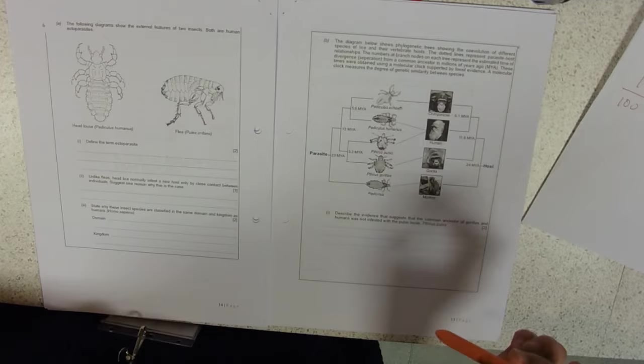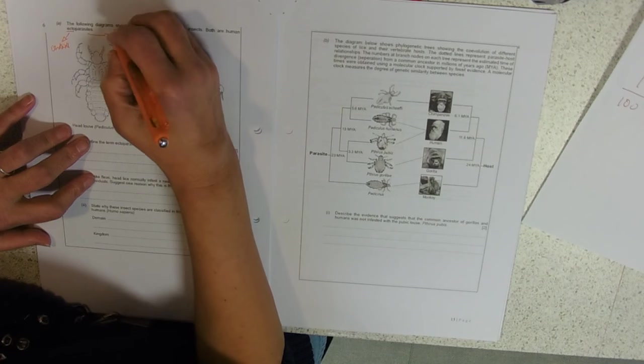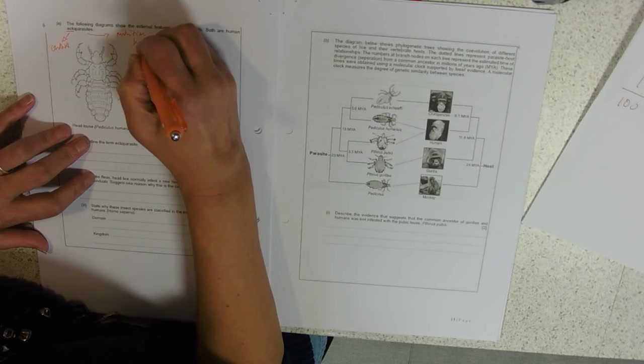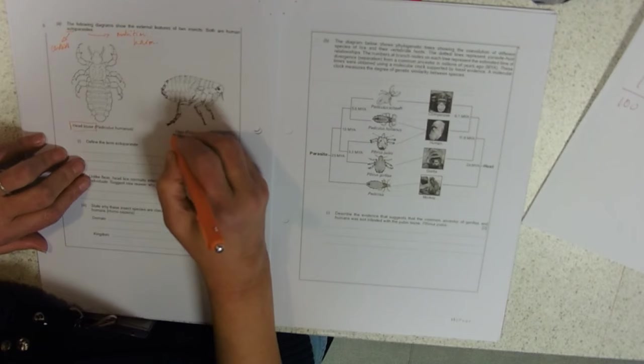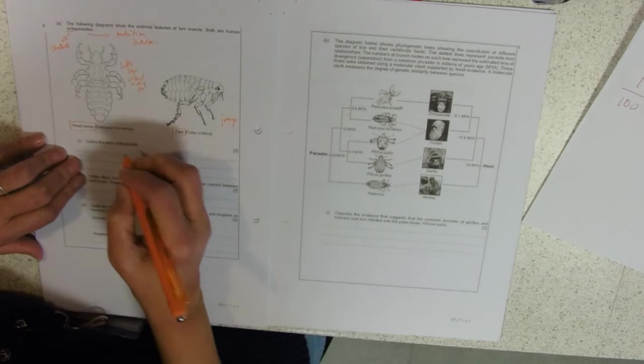What does ecto mean? Outside. What does parasite mean? Straightforward definition, we need to talk about nutrition and harm. We've got a head louse and a flea. What do you know about fleas? Fleas jump. Head lice have little legs and claws, so they crawl and cling on.